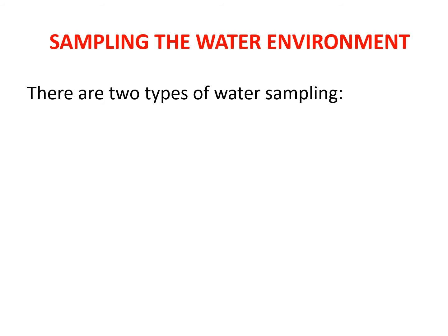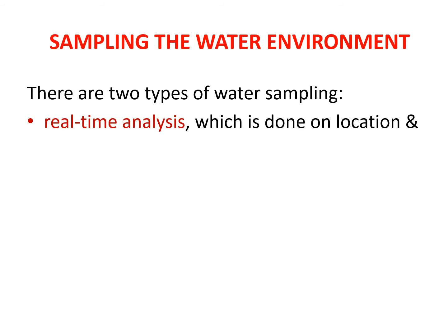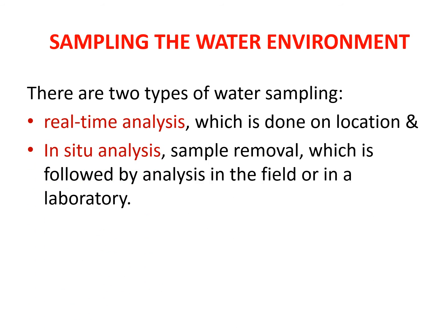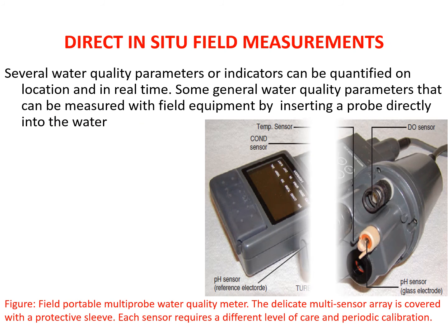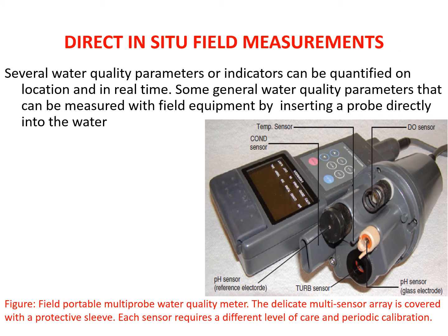We can do two types of water sampling: real-time analysis done on location within the stream or water body, and in-situ analysis — sample removal followed by analysis in the field or laboratory. This instrument shown here is used for direct in-situ field measurement.